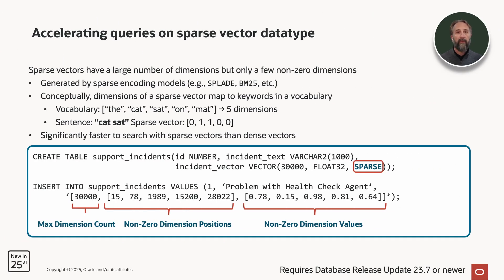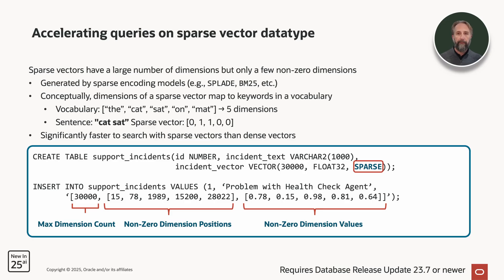Also new in Exadata System Software 25.2 is the ability to accelerate queries on sparse vector data types. Sparse vectors have a large number of dimensions, but only a very few of those dimensions have a non-zero value. They're generated by sparse encoding models such as SPLADE and BM25. Conceptually, dimensions of a sparse vector map to keywords in the vocabulary, making them very efficient for keyword lookup workloads. A vocabulary such as 'the cat sat on mat' is an example of a very simple five-dimension vocabulary, and a sentence such as 'cat sat' would result in a sparse vector such as 0, 1, 1, 0, 0. With such workloads, it's significantly faster to search with sparse vectors than dense vectors. New in Exadata System Software 25.2 is the ability for AI smart scan to offload querying of sparse vectors down to the storage servers.